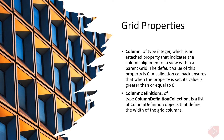The following are some of the properties of the Grid element. Column, of type integer, is an attached property that indicates the column alignment of a view within a parent grid. The default value is 0, and a validation callback ensures its value is greater than or equal to zero. ColumnDefinitions, of type ColumnDefinitionCollection, is a list of ColumnDefinition objects that define the width of the grid columns.